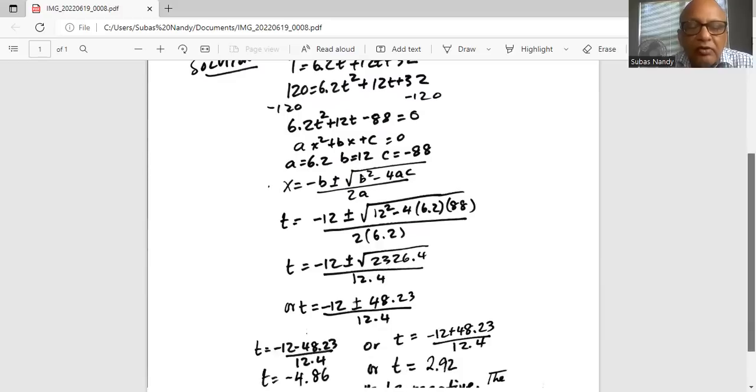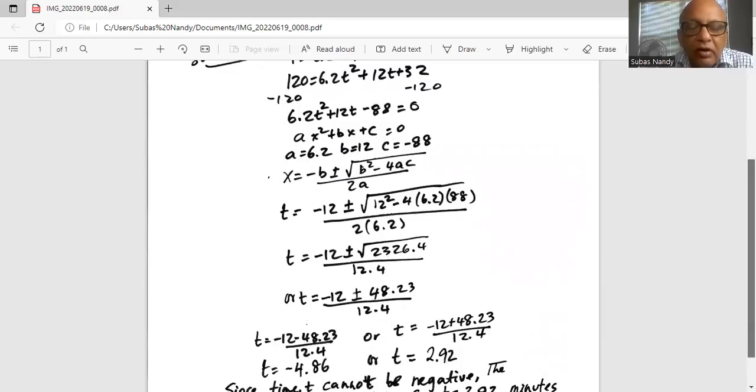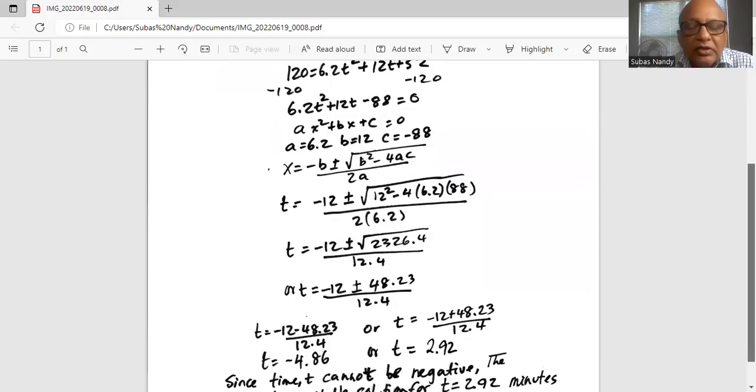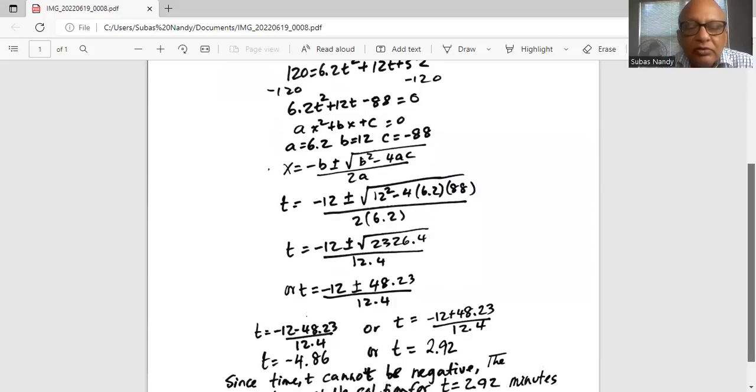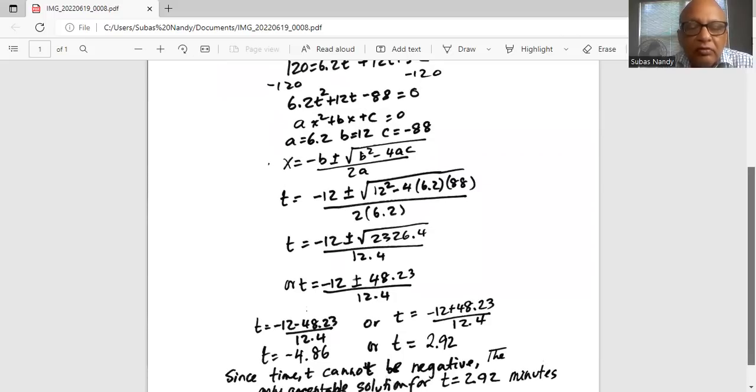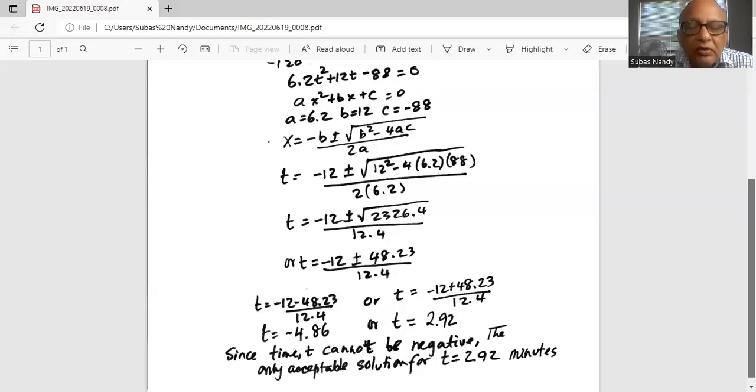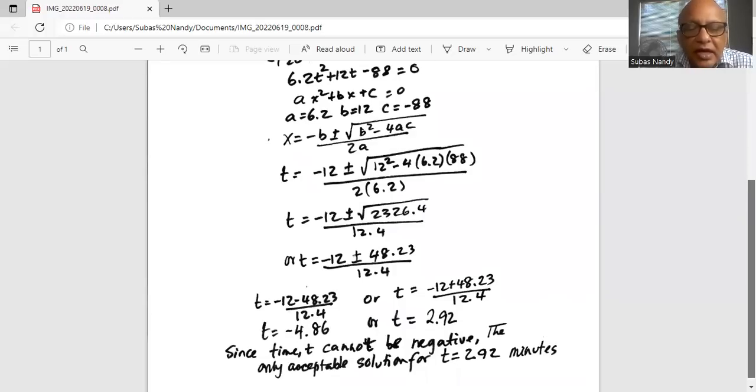So there are two possible values of t. One is t = (-12 - 48.23) / 12.4. The other one is t = (-12 + 48.23) / 12.4. So we get t = -4.86 or t = 2.92.